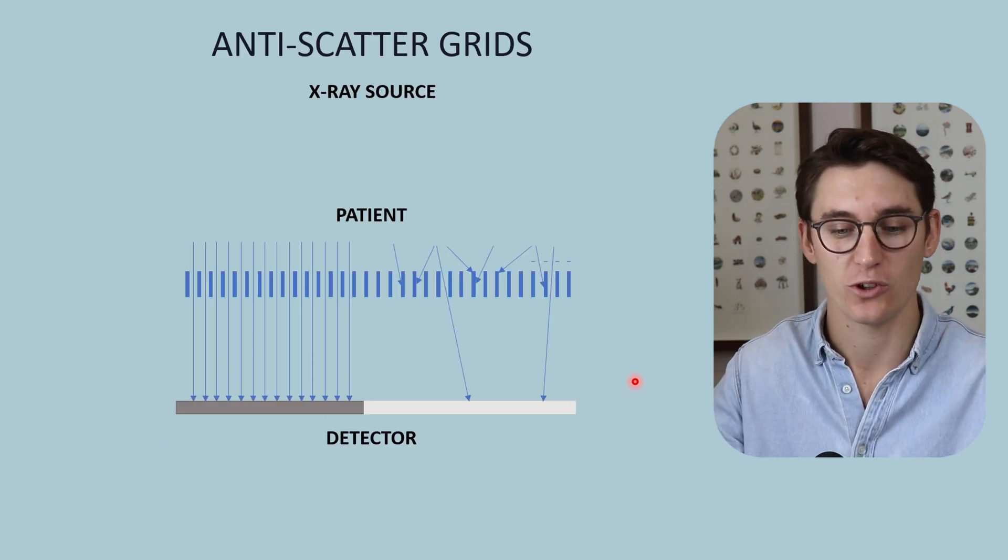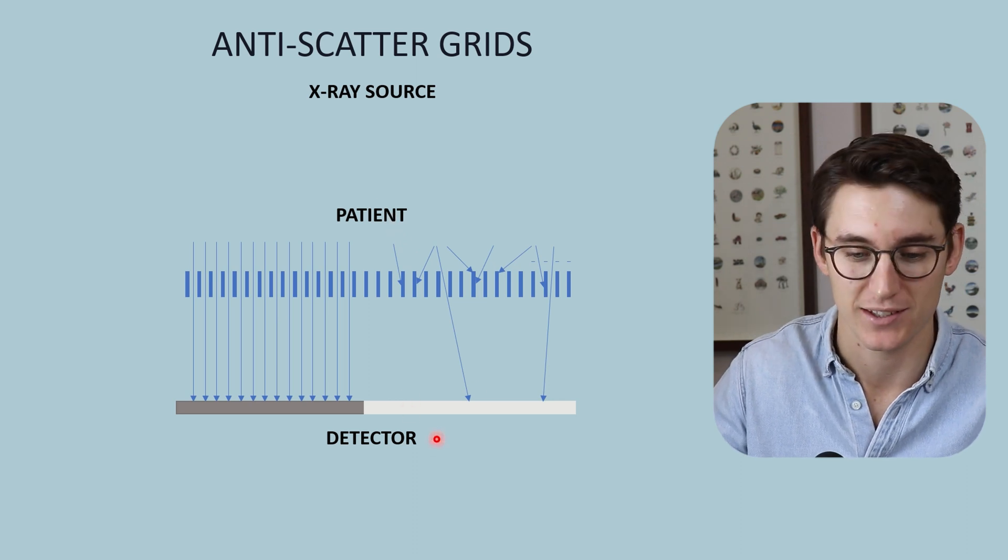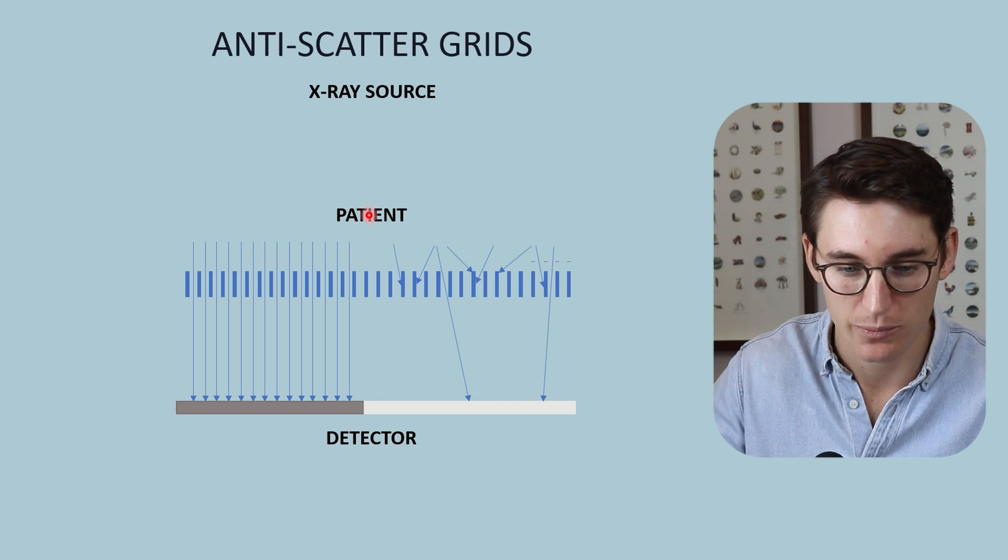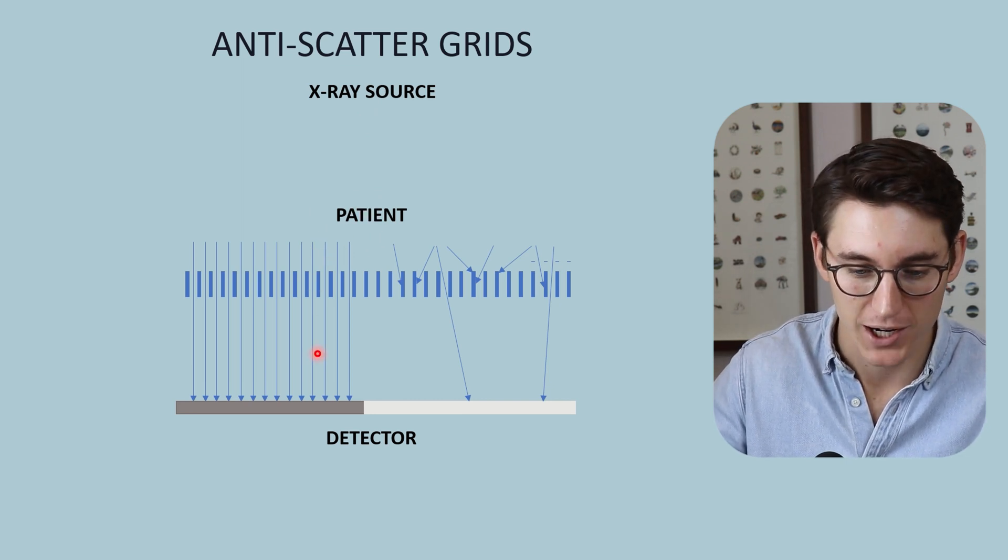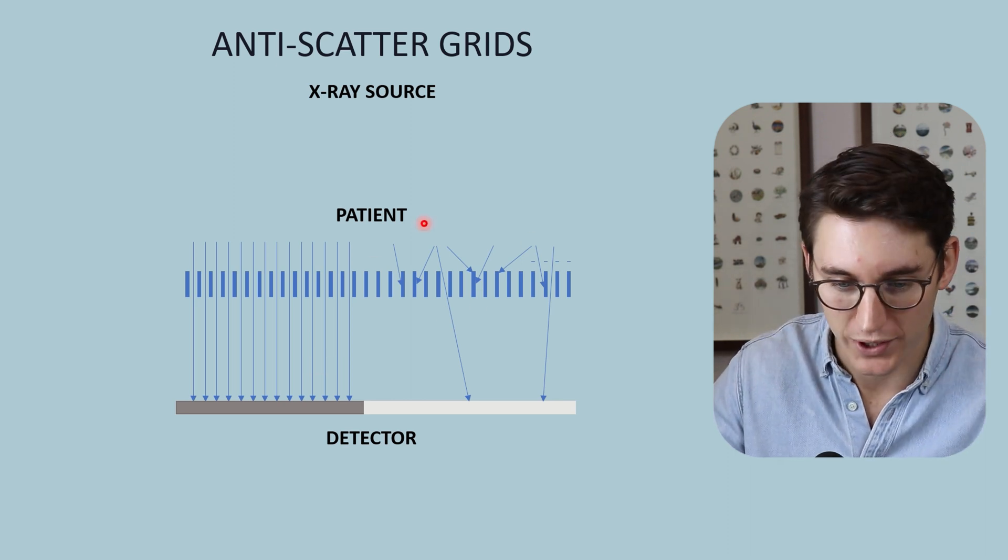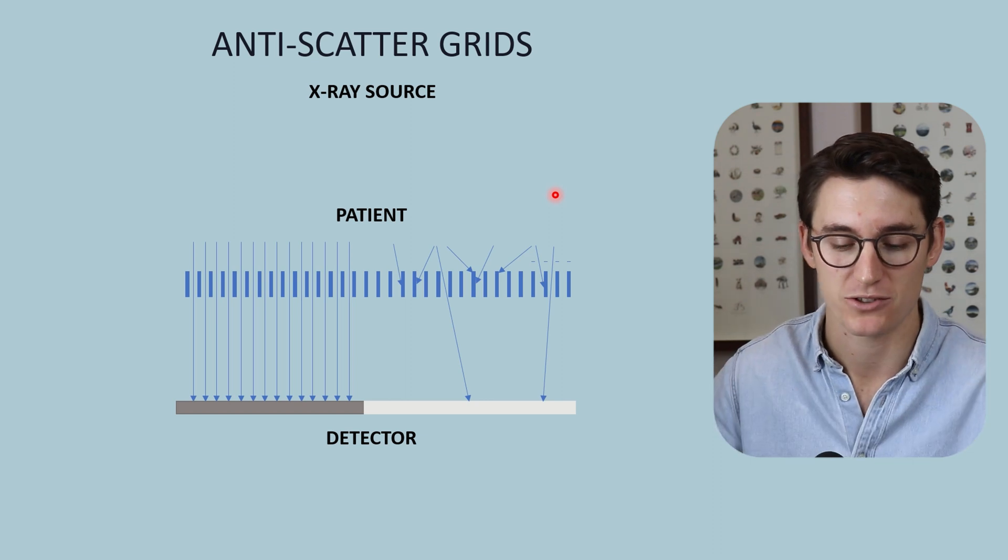Now the last thing that we can do is place what is known as an anti-scatter grid between our patient and the detector. We are producing x-rays at an x-ray source. They interact with the patient, and they can either be primary transmitted x-rays that are parallel with our x-ray source, or they can be scattered x-rays that come off at different angles from our primary x-ray beam.